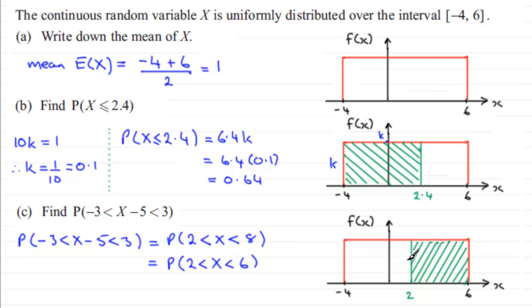So it's just a question of working out that area. We know that the height of this is 0.1, so that probability is going to be that length there from 2 to 6 which is going to be 4, and we're going to multiply it by the height 0.1 and you can see that that's going to give us 0.4.